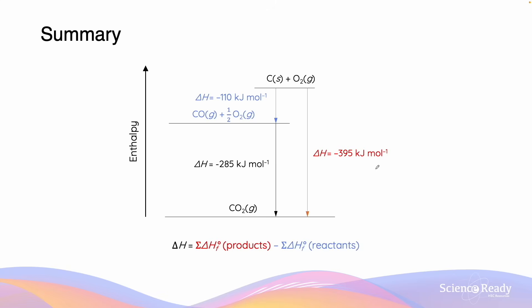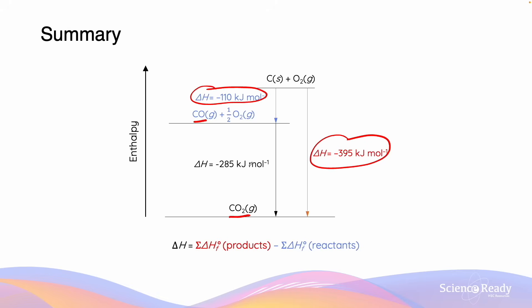In this diagram, we can visualise how the enthalpy change equals the difference in the enthalpy of formation values between the products — carbon dioxide — and the reactants — carbon monoxide. Delta H equals delta HF of products minus delta HF of the reactants.